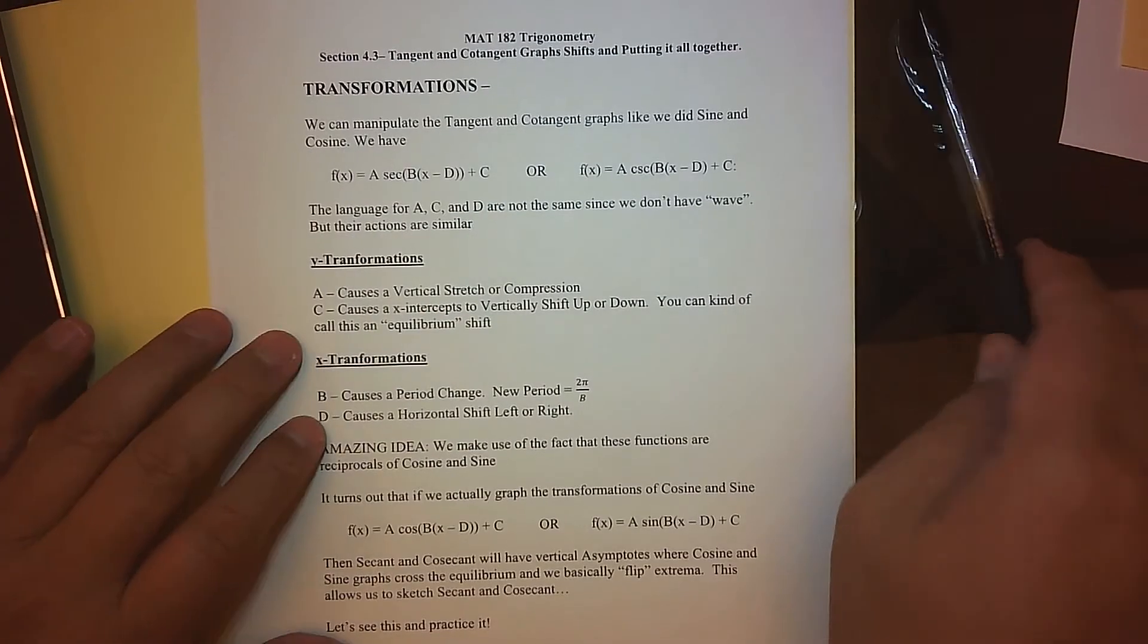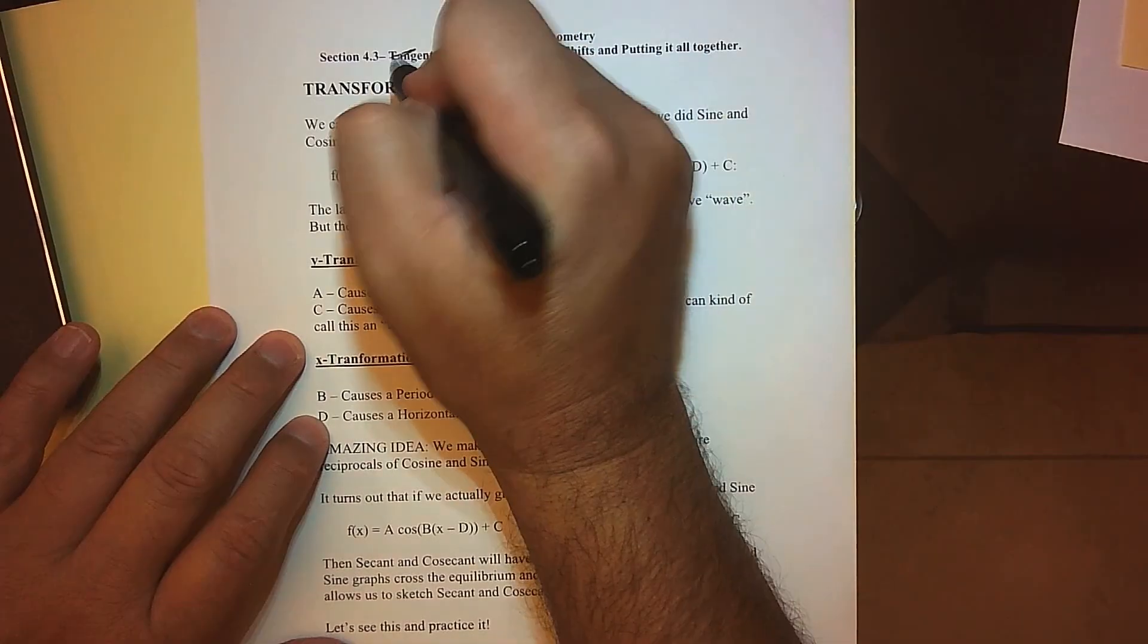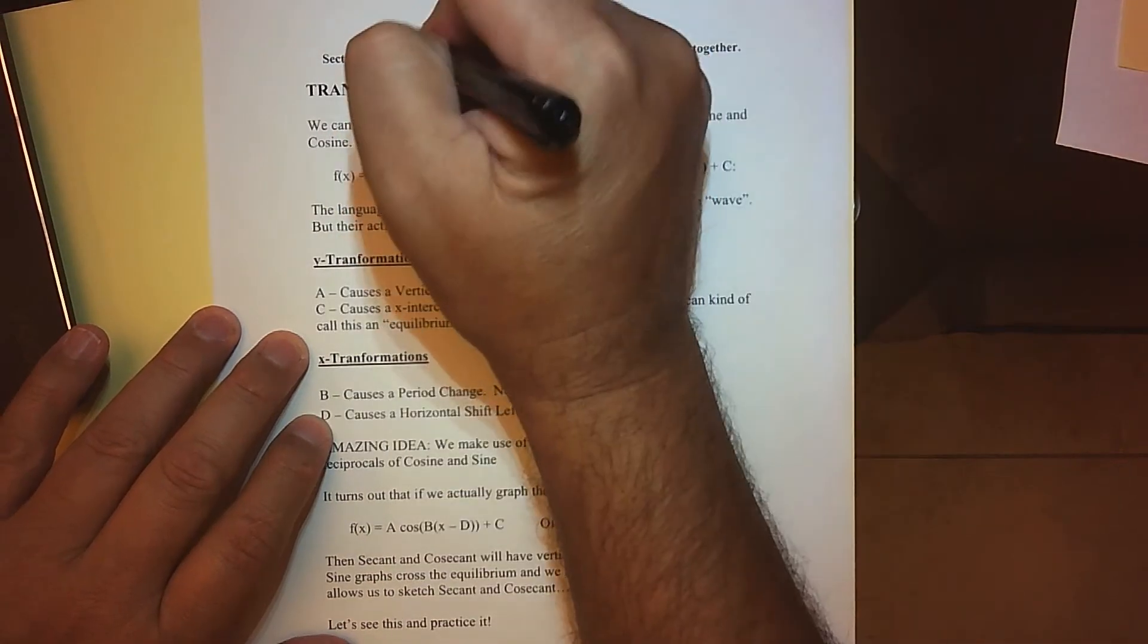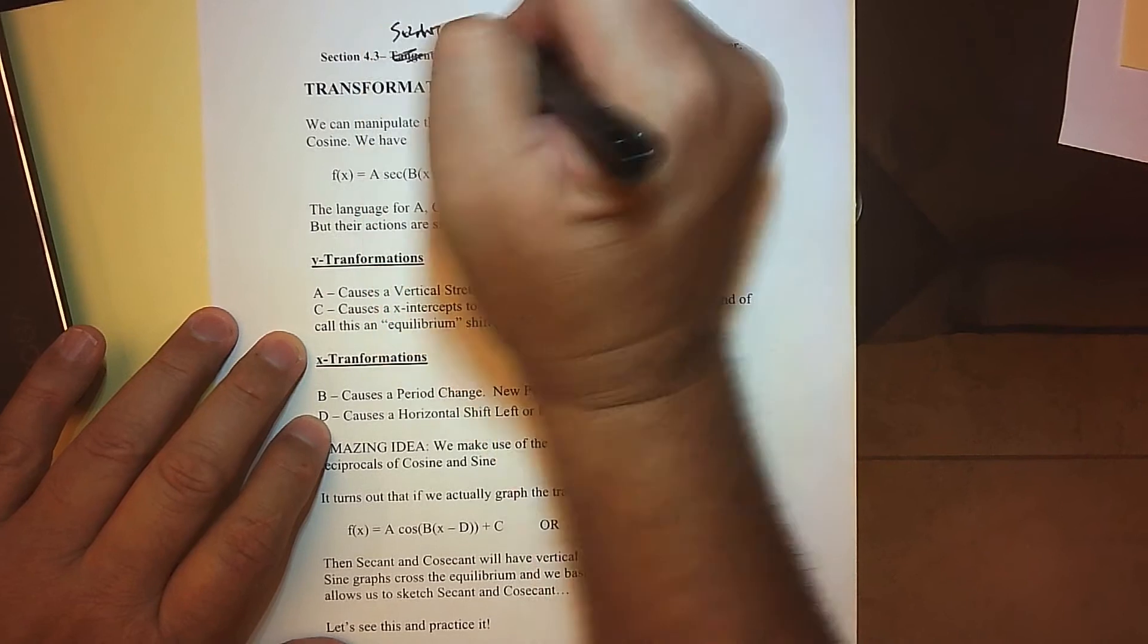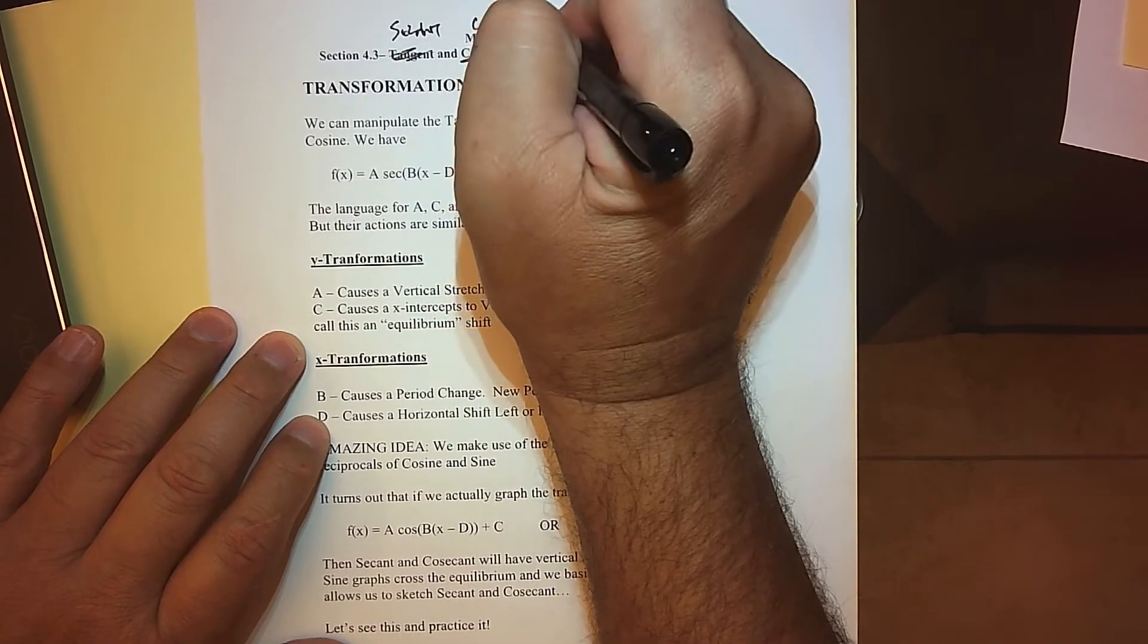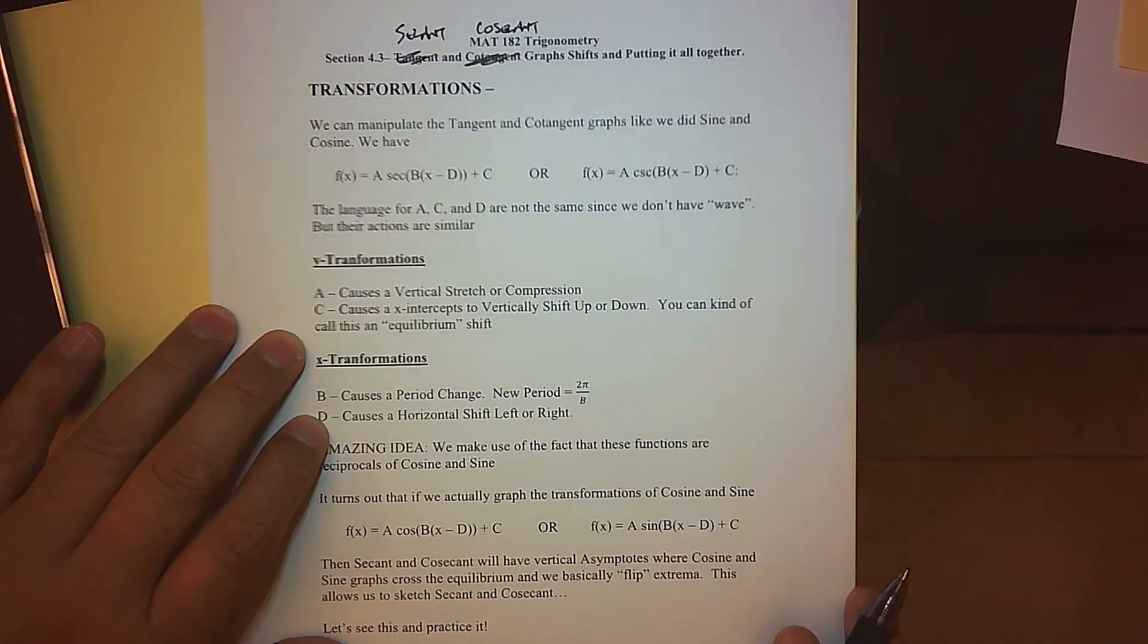Okay, so with regard to secant and cosecant, and by the way I think I forgot, so we're talking secant and cosecant. What we're going to do is similar to what we did with the other four functions.